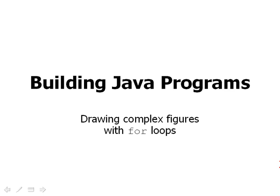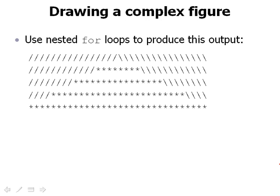This video is about how to produce complex figures using for loops. Let's imagine we've been asked to draw a figure as the output of our program. The figure has several different lines of output, and each line has a pattern of characters — some number of slashes, then some number of stars, then some backslashes.